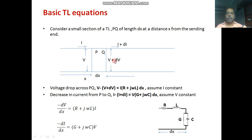We consider first the voltage drop across PQ. The voltage drop across PQ will be v minus (v plus dv), which equals the resistance and inductance drop. So we write: v minus (v plus dv) is equal to i(R + jωL) dx. R and L are expressed on the basis of per unit length — ohms per meter and henries per meter — so for length dx, the total resistance is R·dx and total inductance is L·dx.